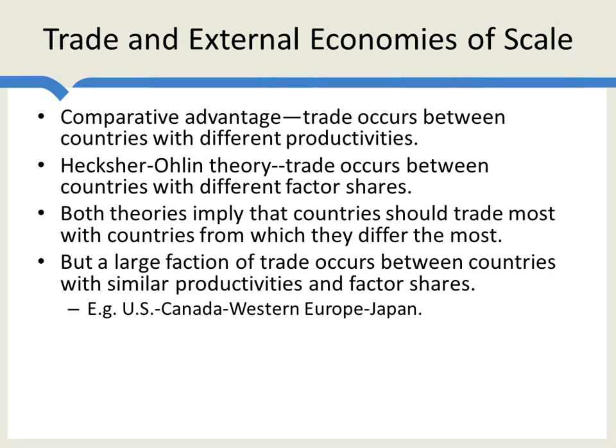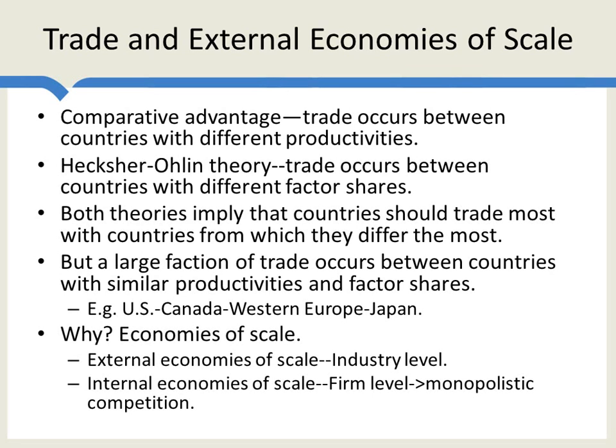For example, there's a huge amount of trade between the US and Canada. And more generally, there's a lot of trade between the United States, Canada, Western Europe and Japan — the developed economies. Now, this doesn't mean that comparative advantage and Heckscher-Ohlin theory are wrong, but it does certainly mean that they're incomplete. And we want to look at some other theories which may help us to explain some of the facts about trade.